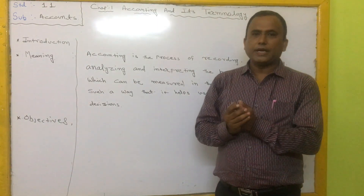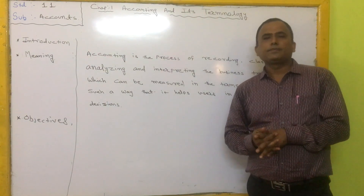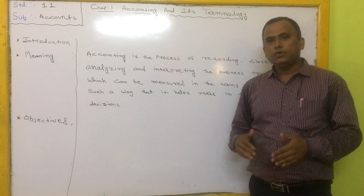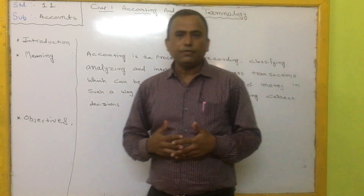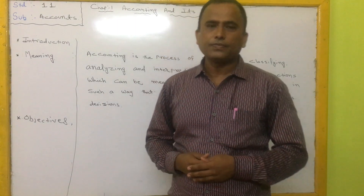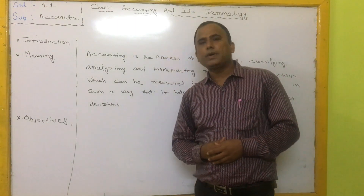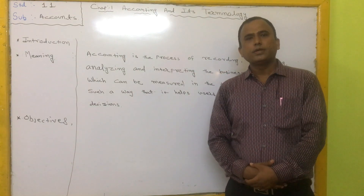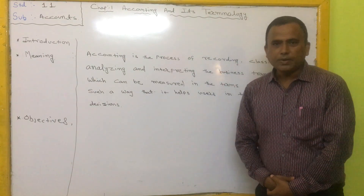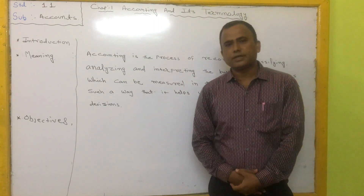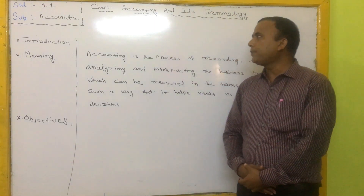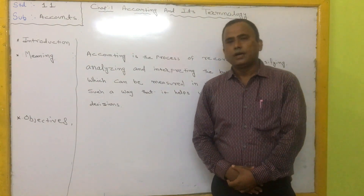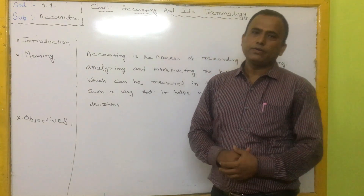As an introduction, accounting started from the Asian bank. Generally, we do accounting with two methods. The first is the Desi Nama Vahi System, which is the oldest accounting method. The second is the Double Entry Bookkeeping System, which is a very scientific method and is accepted by the entire world.